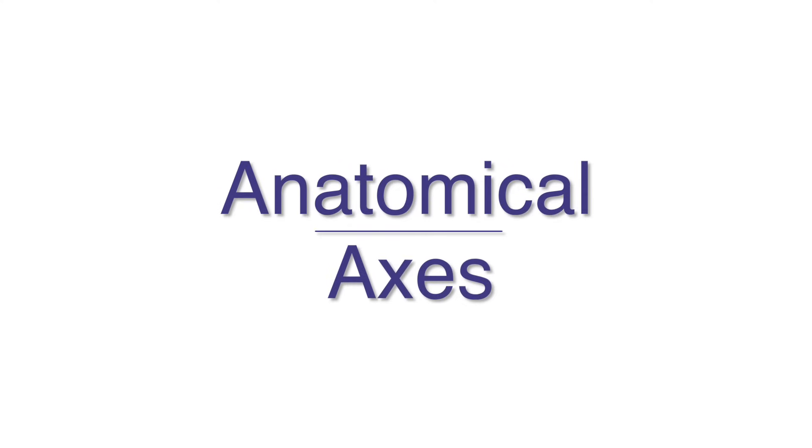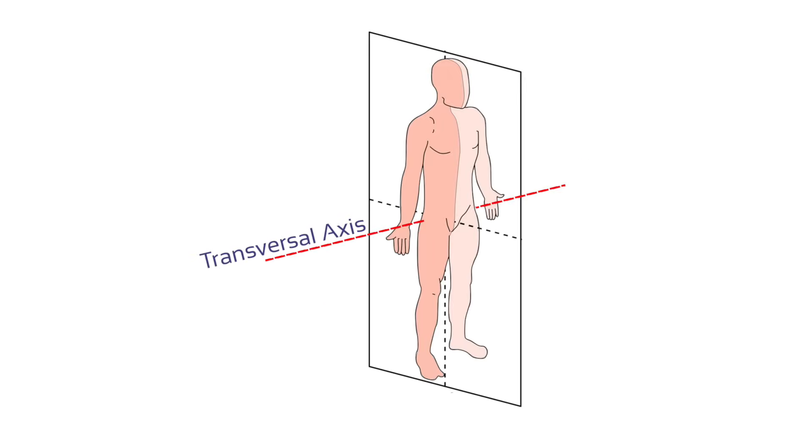When an osteokinematic movement takes place in a certain plane, bones rotate around an axis. When a movement takes place in a sagittal plane, we are seeing a rotation around or perpendicular to the transversal, also called frontal axis.